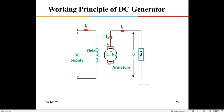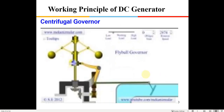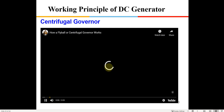As the load increases from 1 kΩ to 100 Ω, more current flows in the armature, creating a stronger opposing magnetic field. This requires even more torque to maintain the RPM. So as electrical load increases, more fuel is consumed by the diesel engine — demonstrating the law of conservation of energy in action.